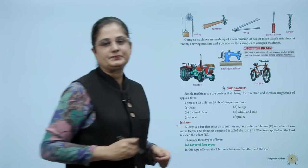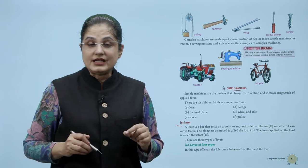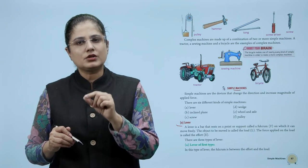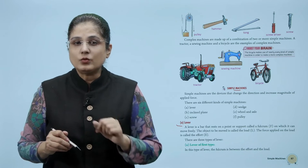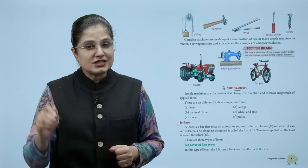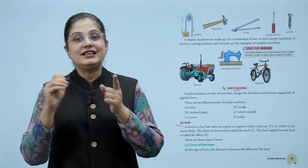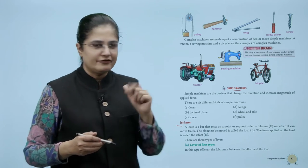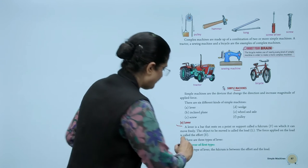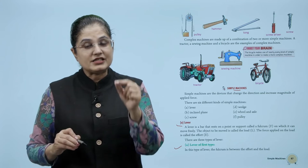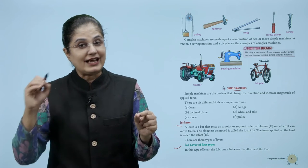First, let us look at the lever. A lever is a bar that rests on a point or support called a fulcrum on which it can move freely. The object to be moved is called the load, and the force applied on the load is called the effort. There are three types of levers. First is the lever of the first type, where the fulcrum is between the effort and the load.